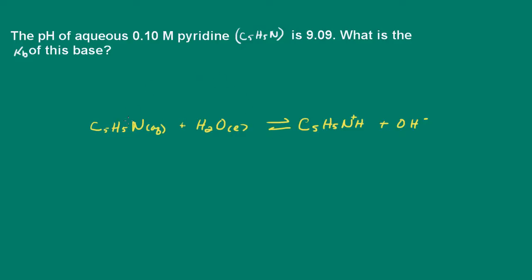So what I did, I wrote out the equation here. We have the pyridine in water and it is going to accept a proton from the water to produce the cation and hydroxide ion.